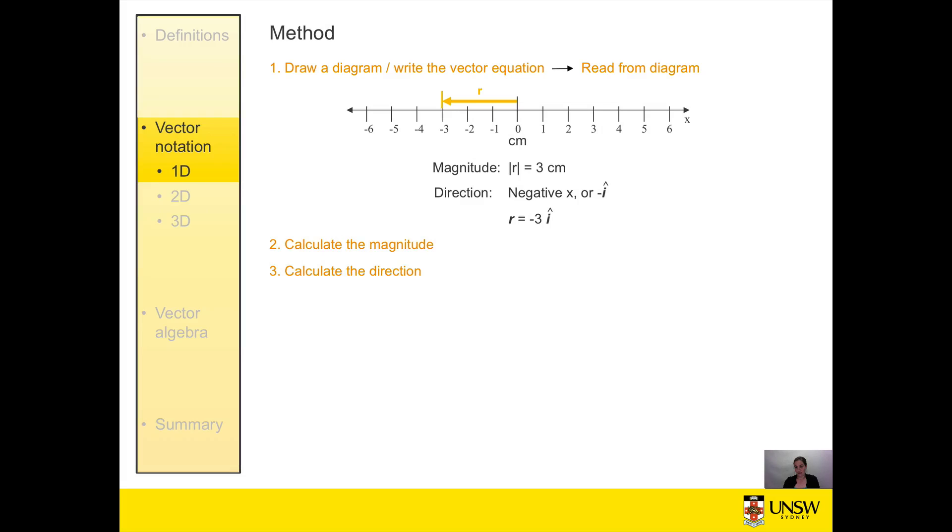Our next two steps to calculate the magnitude and direction are not necessary in the one dimensional case, because we already have them from the diagram. That leaves us with our final step, which is to describe our vector. The only important point is that the description has to be unambiguous. In this case we could say our vector r is equal to 3 cm in the negative direction, or r equals minus 3i.